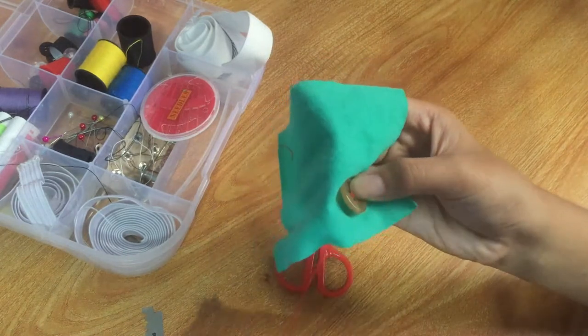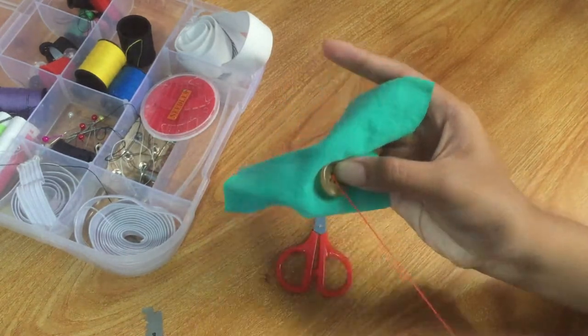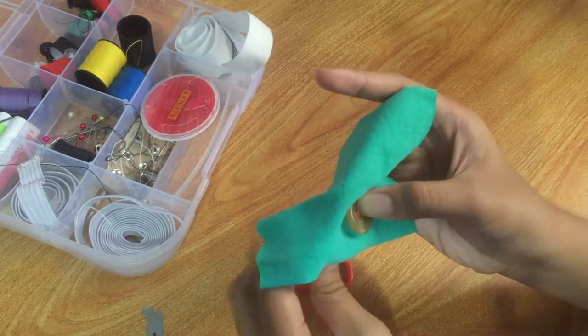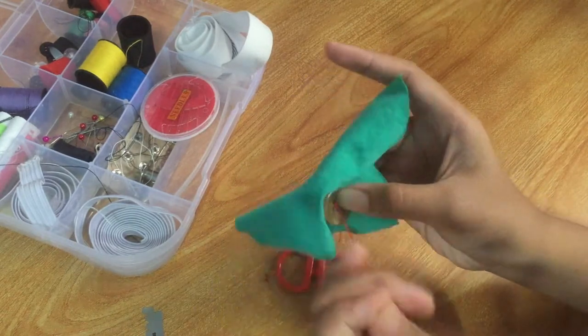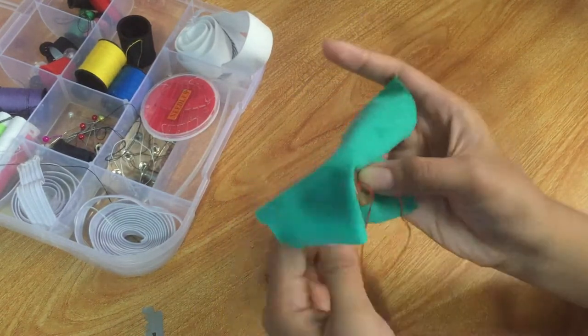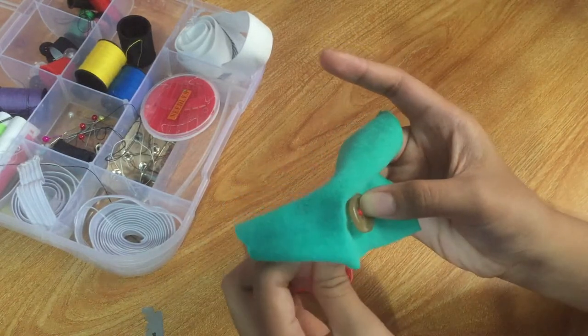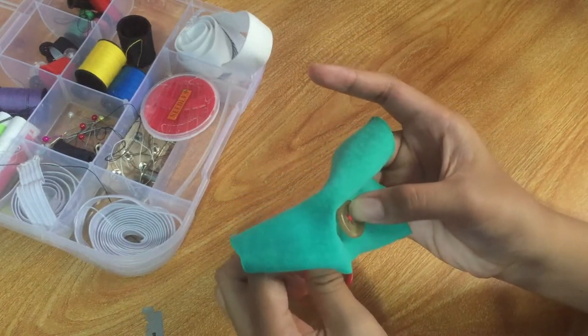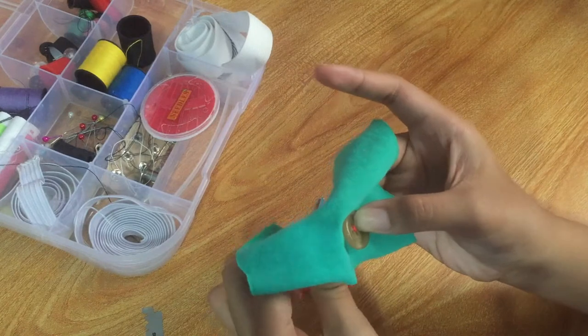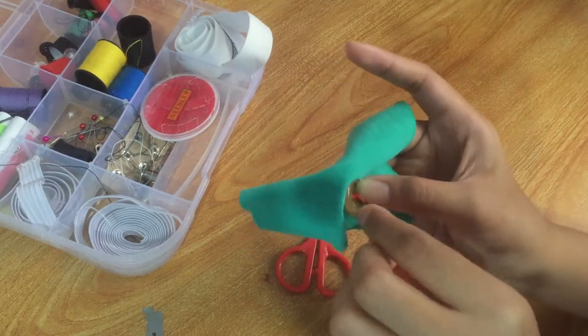Then, tie a knot at the end of the thread. One way to tie a knot is to wrap the thread around your finger. Roll the thread between your fingers and pull it tight. If you double the thread, tie the ends together.